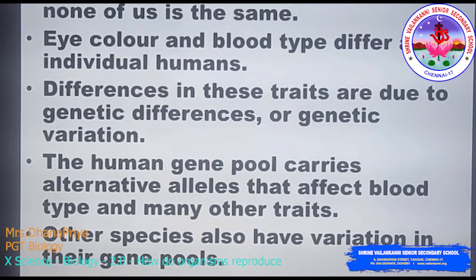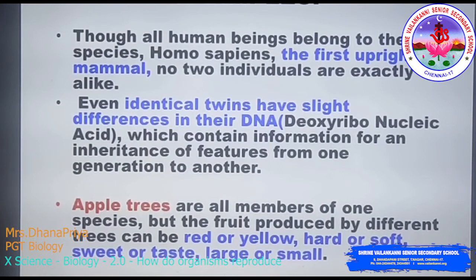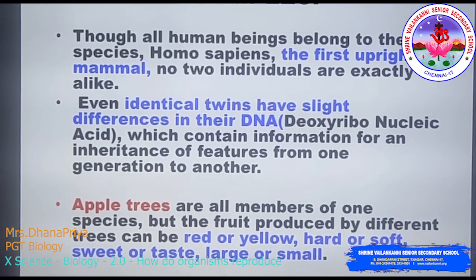Eye color and blood type differ among individual humans. These differences are due to genetic variation. The human gene pool carries alternative alleles that affect blood type and many other traits. For example, though all human beings belong to the species Homo sapiens, no two individuals are exactly alike. Even identical twins have slight differences in their DNA.